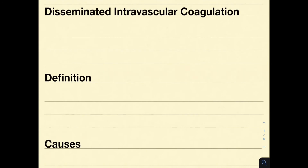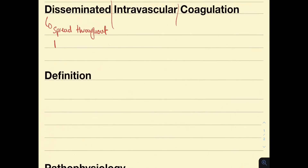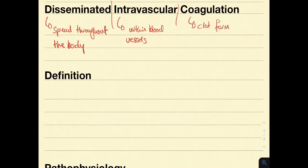On to disseminated intravascular coagulation, or DIC. Let us first start by defining the name. Disseminated means having spread throughout the body. Intravascular means within the blood vessels, and coagulation means clot formation. So this means that there is clot formation within the blood vessels throughout the body.